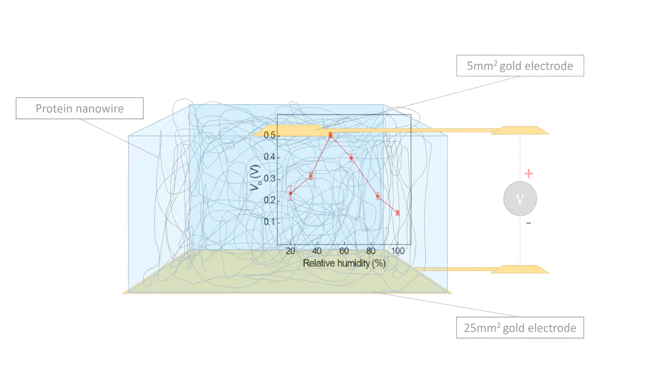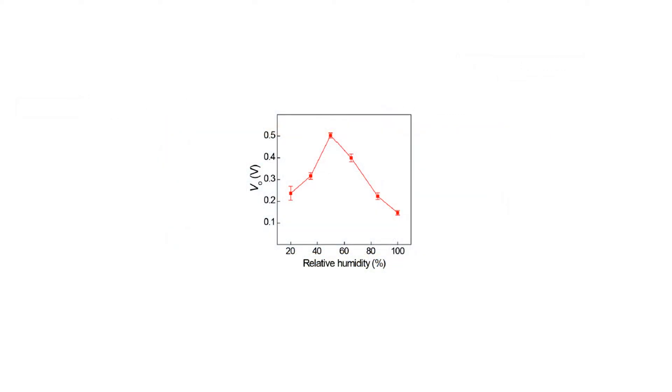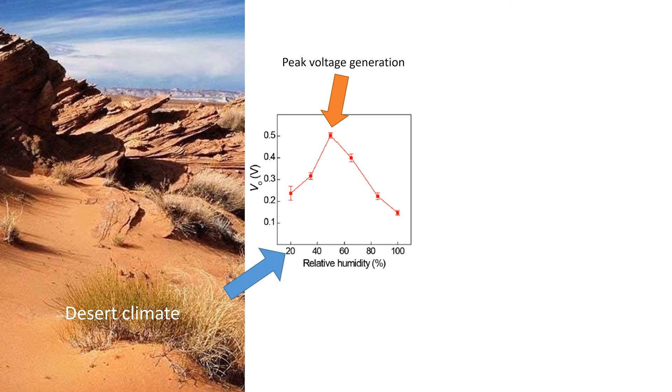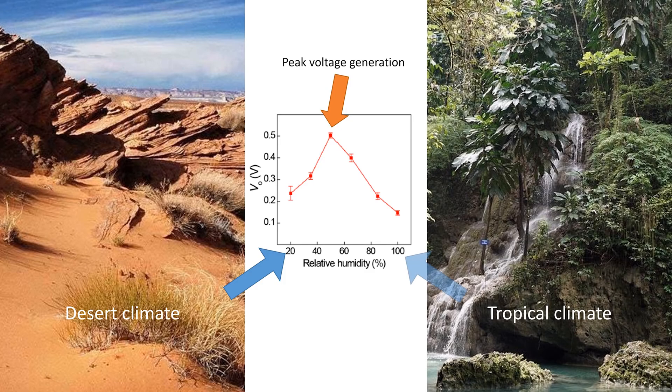Interestingly, the researchers found that the device behaved differently than previous moisture-based energy harvesting systems. Rather than increasing in voltage the higher the humidity, they found a parabolic profile, where the peak voltage generation was found at around 40-50% humidity. The experiment also showed that the device was capable of generating power at humidities as low as 20%, comparable to desert conditions, as well as 100%, comparable to tropical climates.